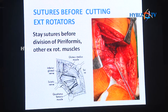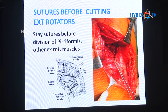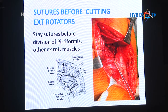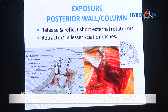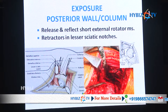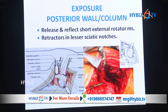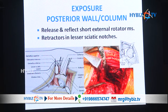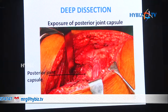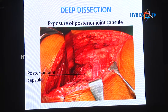You should identify the piriformis and other external rotators, go proximal approximately 1.5 centimeters away from the trochanter, and apply a stay suture before division, otherwise you will not be able to reattach the piriformis and you will damage the vessels. Then release these muscles, retract them, and put a retractor in the lesser sciatic notch — you should not put the retractor in the greater sciatic notch.